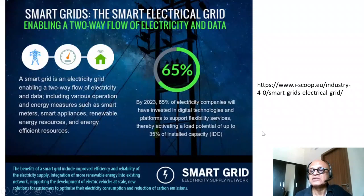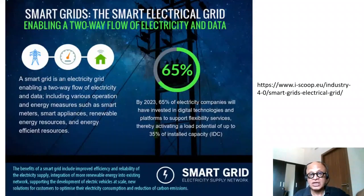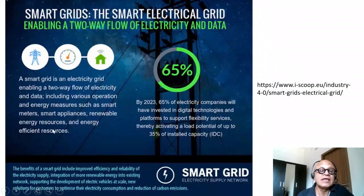From the EU: the smart electrical grid enables a two-way flow of electricity and data — just like autonomous vehicles communicate with other cars, traffic systems, and weather data. A smart grid is an electricity grid enabling two-way flow of electricity and data, including various operations and energy measures such as smart meters, smart appliances, renewable energy resources, and energy-efficient resources.